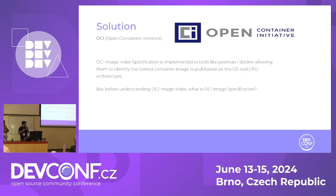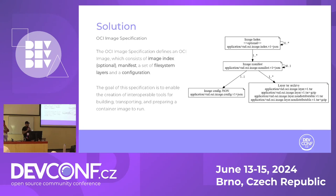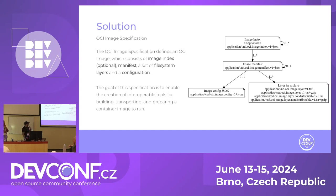But before understanding OCI image index, what is an OCI image specification? Basically, the OCI image specification defines what a container image is in an OCI way, which consists of an image index (the first box on the top, which is optional), the manifest, a set of file system layers, and configuration. In the manifest, we have a configuration which teaches how to build that container image using the layers. The goal of this specification is to enable the creation of interoperable tools for building, transporting, and preparing container images to run — a standard so we can build a lot of tools on top of it.